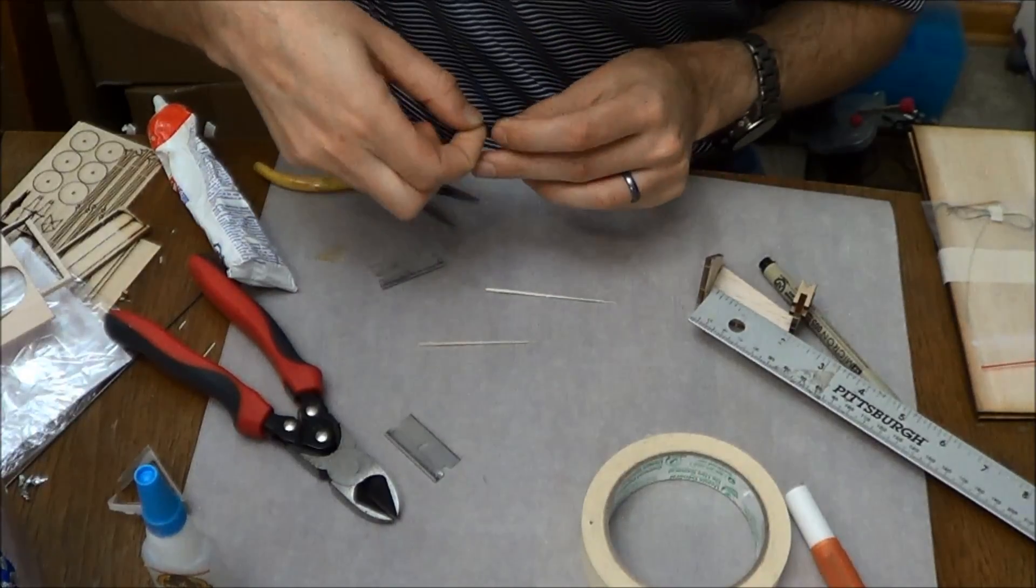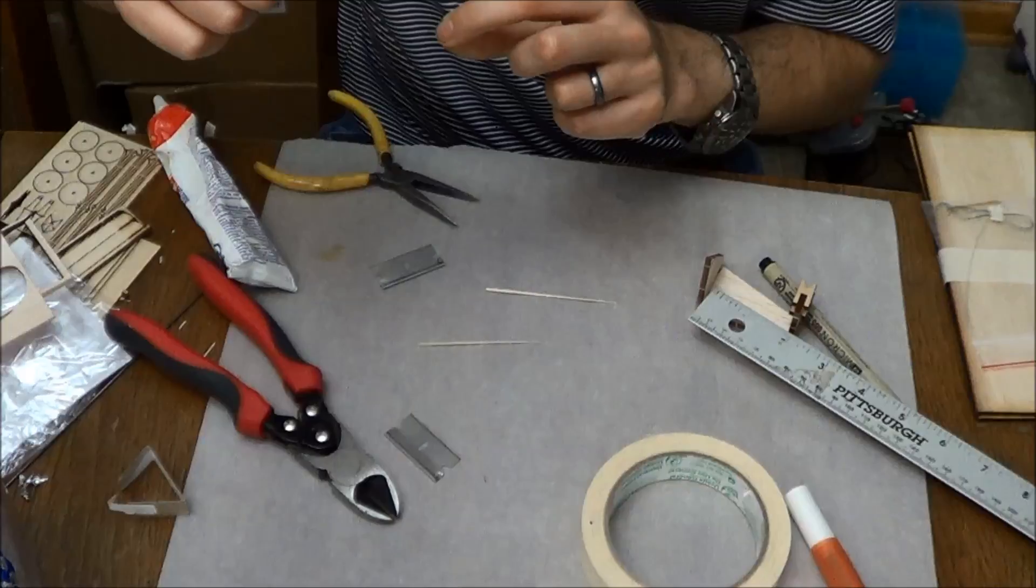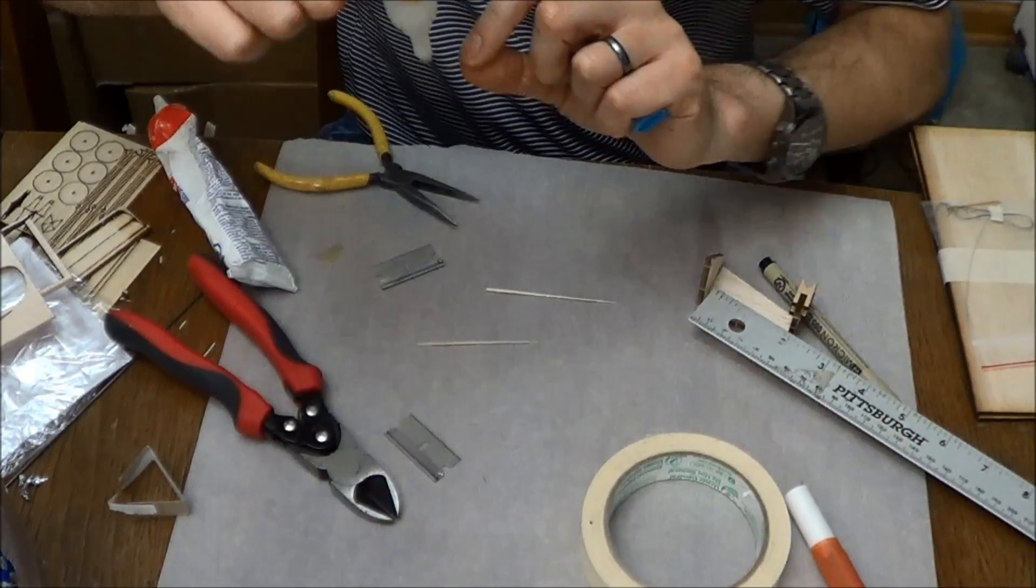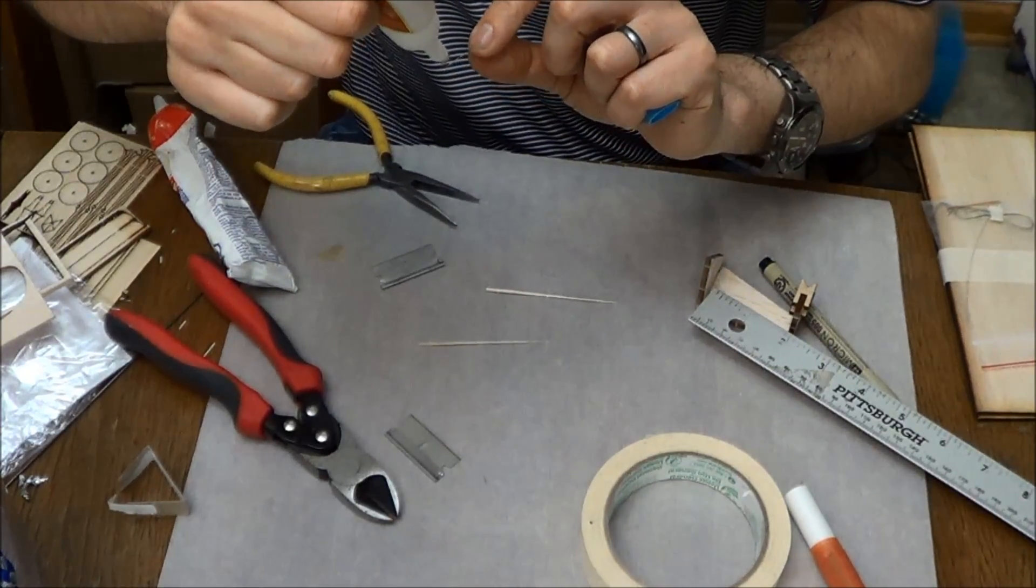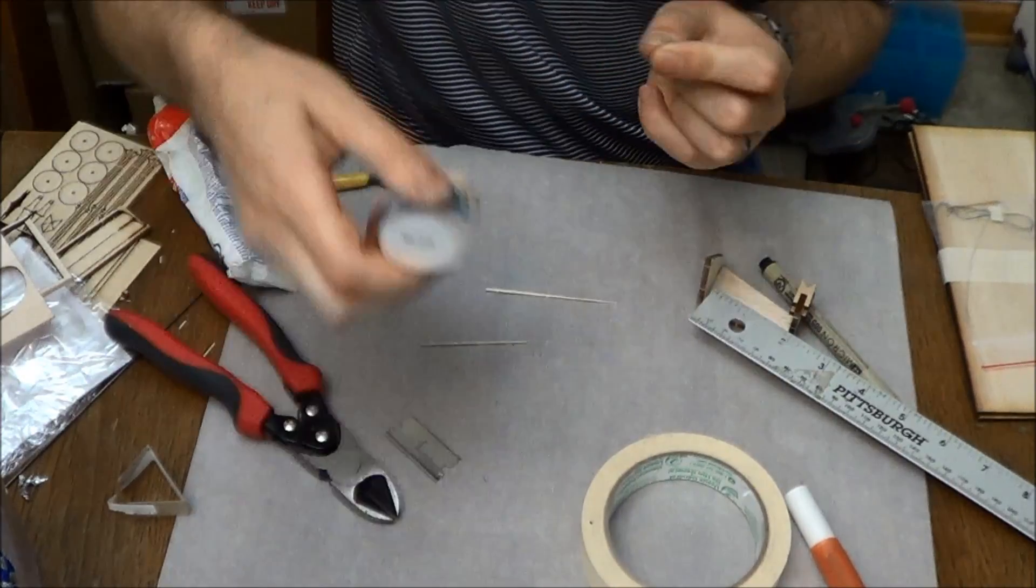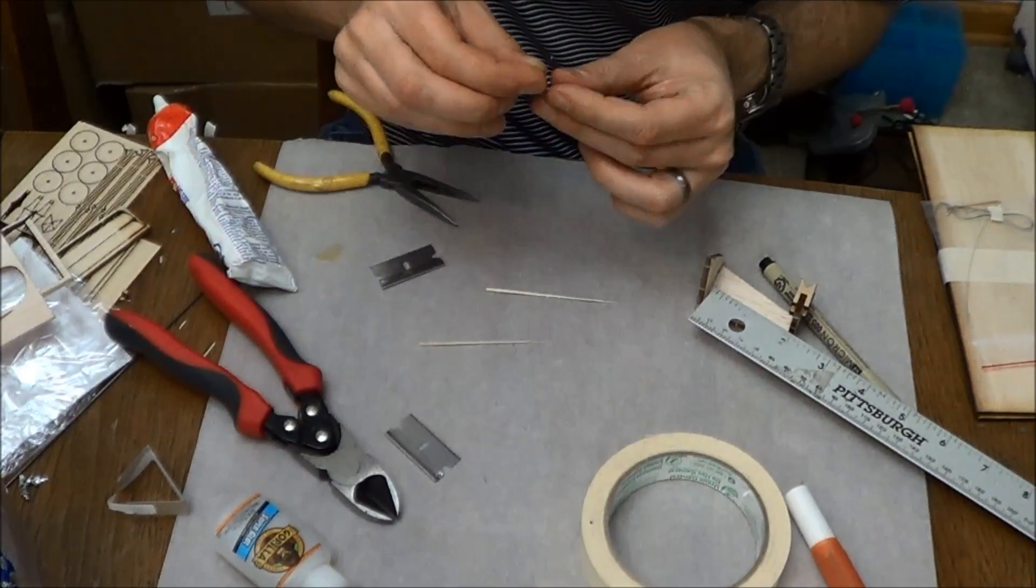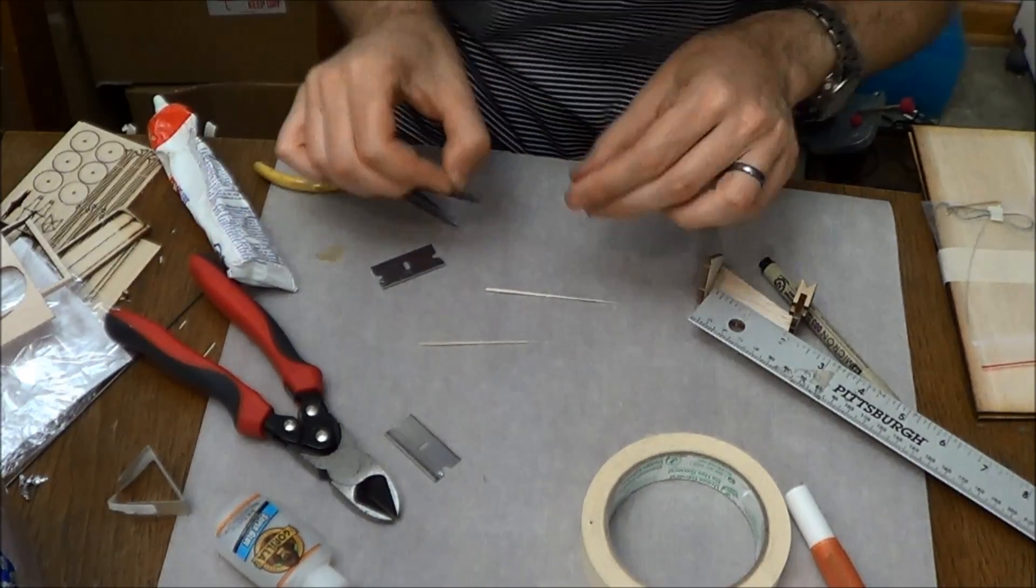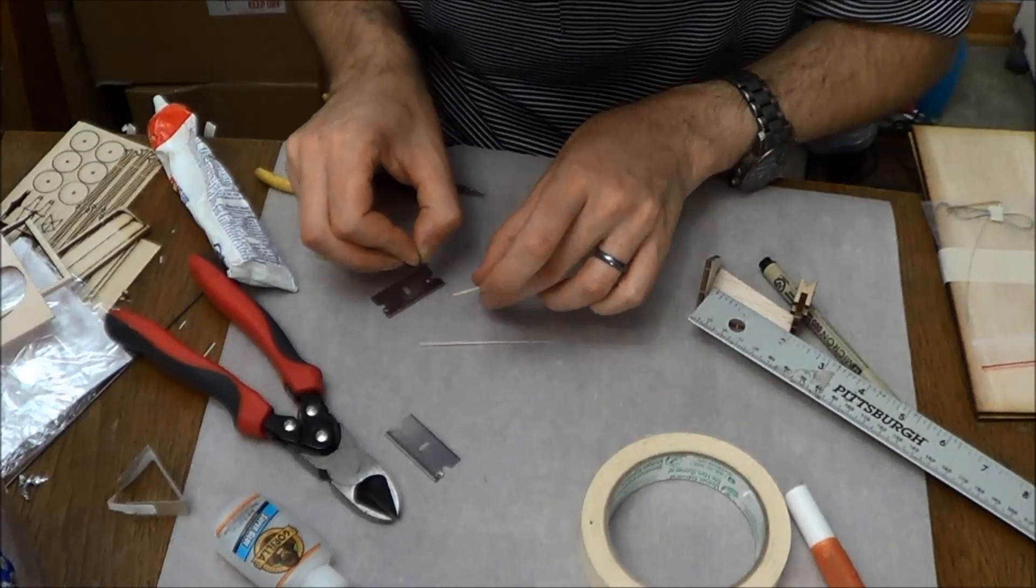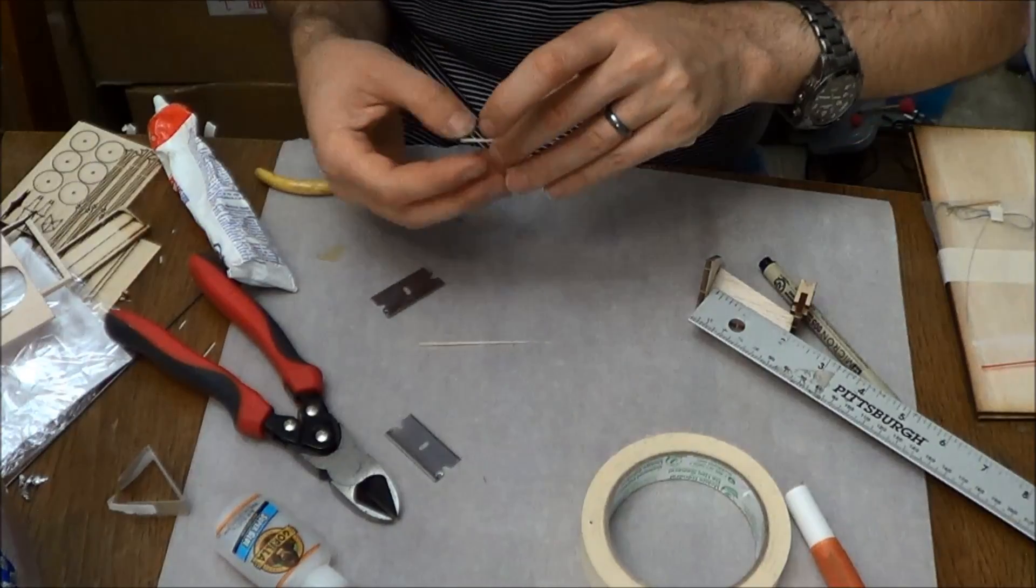So now we're going to take this propeller shaft and put some glue on it. And we want to use some CA glue in this case because we want this to be a pretty rigid joint. And we're going to take this and remember we've got the lasered edges facing out. There we go.